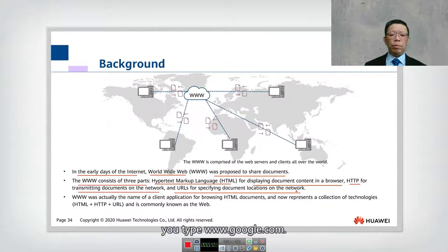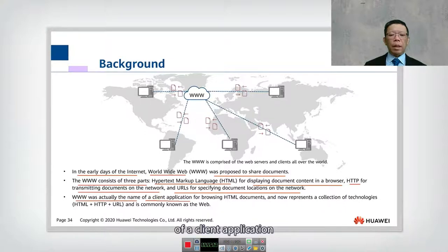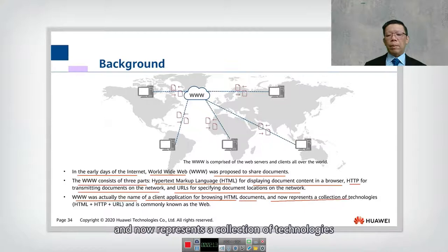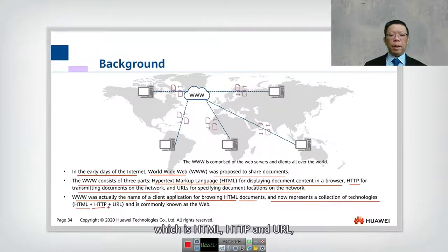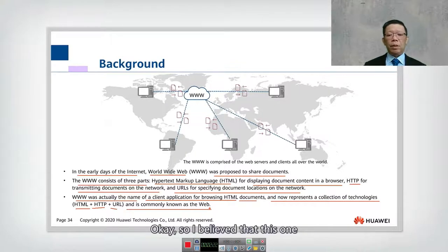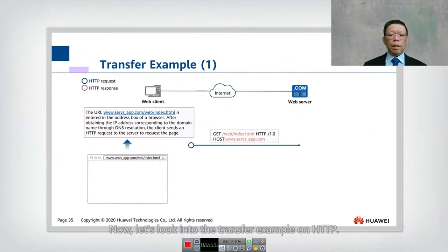If you want to go to Google, you type www.google.com. WWW was actually the name of a client application for browsing HTML documents, and now represents a collection of technologies - HTML, HTTP, and URL - commonly known as the Web. Now let's look into a transfer example on HTTP.